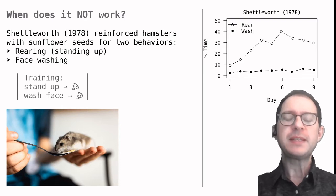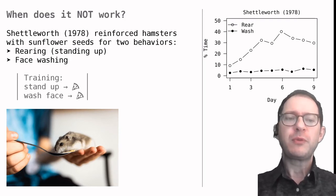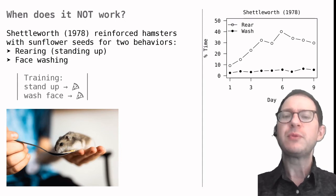The take-home message from these and many other similar experiments is that each reward or punishment is only effective on certain behaviors. Usually, these are the behaviors that the animal naturally performs when looking for that reward or trying to avoid that punishment.